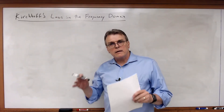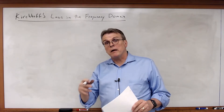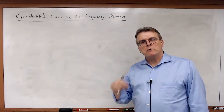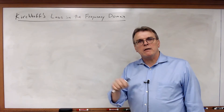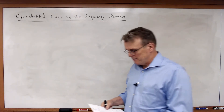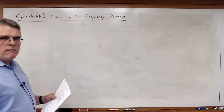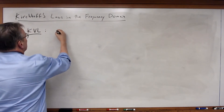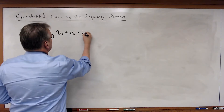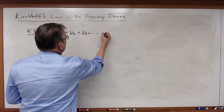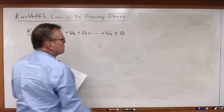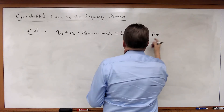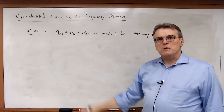Last time we looked at the concept of impedance and we saw how we could apply Ohm's law to phasors. Let's now look at Kirchhoff's laws. If we want to do circuit analysis, we have to see if KVL and KCL work. Let's consider how KVL might work for phasors. Kirchhoff's voltage law says V1 plus V2 plus V3, all the way to V sub n, must be equal to zero for any loop. Let's replace all those voltages with sinusoids.